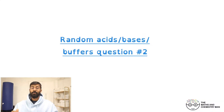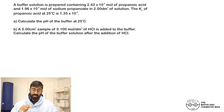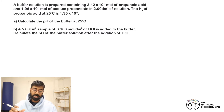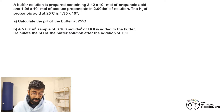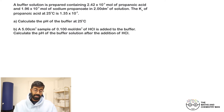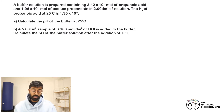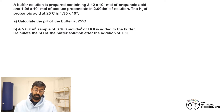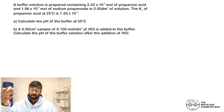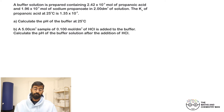Okay, we have buffer question number two. A buffer solution is prepared that contains 2.02×10⁻² moles of propanoic acid and 1.96×10⁻² moles of sodium propanoate in 2 dm³ of solution. The Ka of propanoic acid at 25°C is given. We need to calculate the pH of the buffer, and secondly, calculate a new pH after 5 cm³ of hydrochloric acid is added. Jot this down and have a quick go.